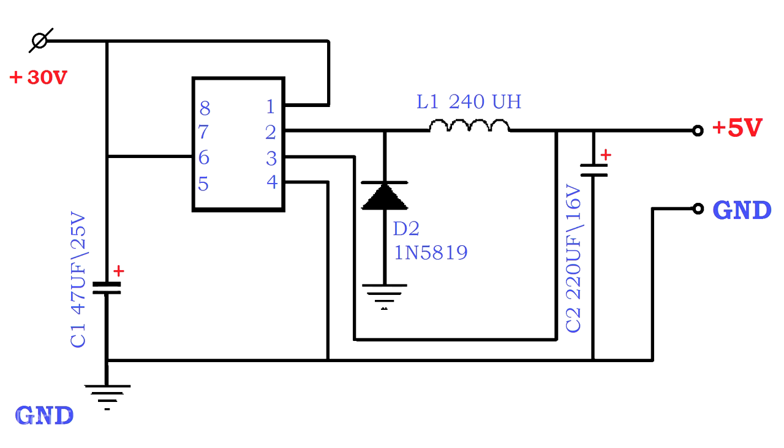Small changes are required to make the circuit adjustable. Pay attention to the third output of the microcircuit. It is responsible for feedback. Now it is connected to the output directly.